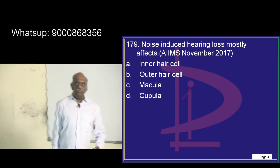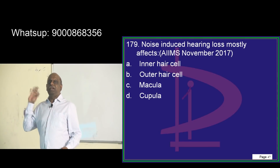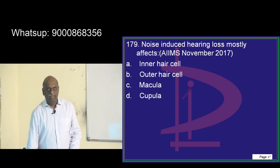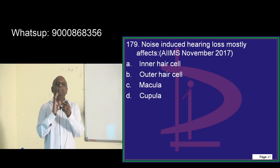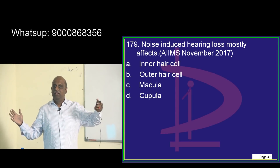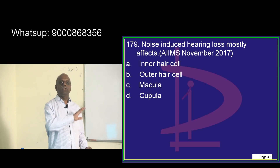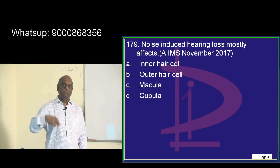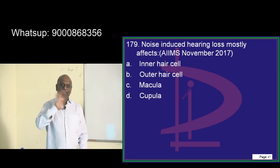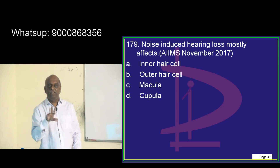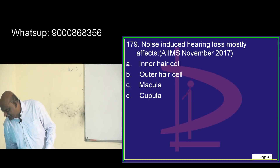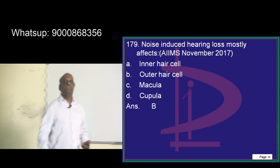Noise-induced hearing loss mostly affects outer hair cells. Deafness is one important topic. Out of the 10 or 15 questions in NEET-PG, invariably there is a question on the Rinne test — Rinne negative, Weber's test, what is the importance of lateralization, how do you differentiate conductive hearing loss from sensorineural? All these things you should be good at. Most of you are correctly saying outer hair cells.